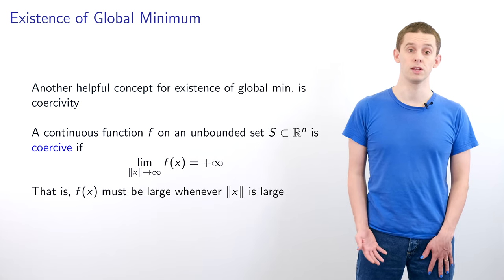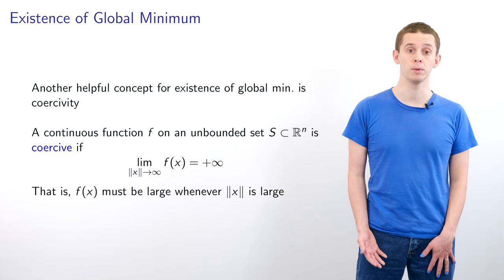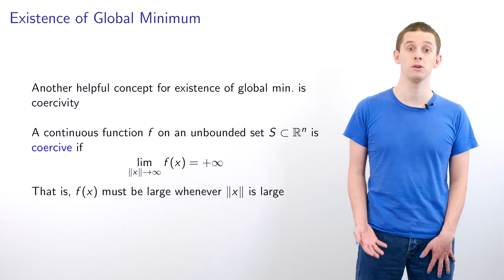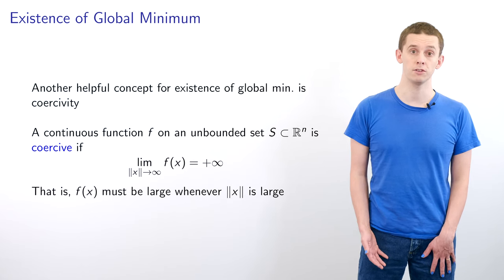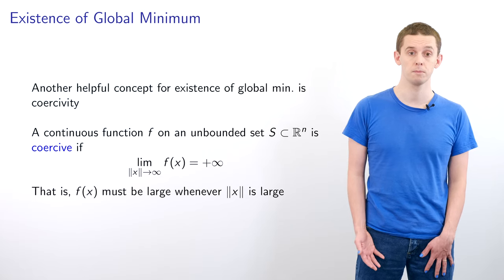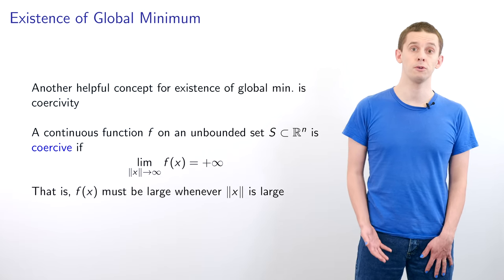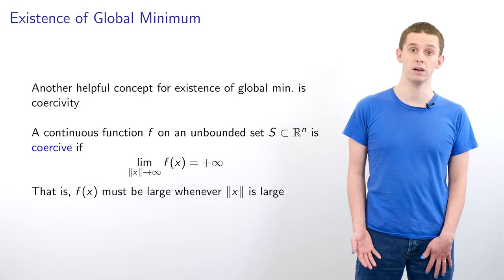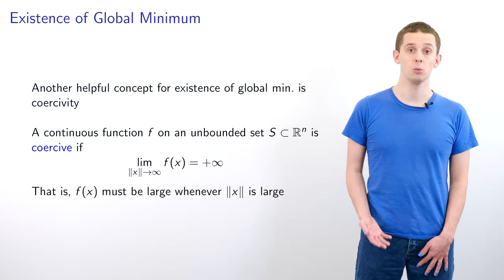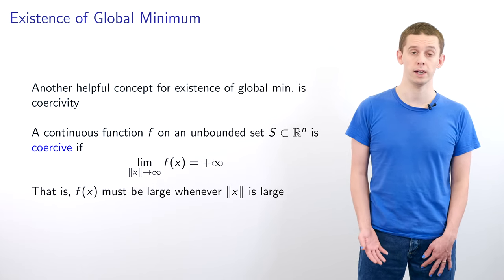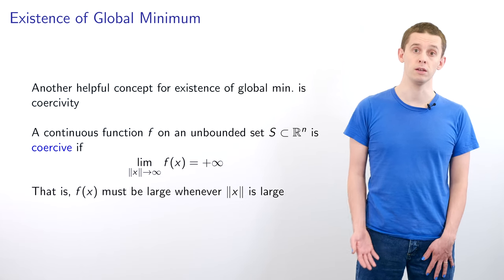Another helpful concept for the existence of a global minimum is coercivity. We say that a continuous function f on an unbounded set s contained within Rⁿ is coercive if the limit as the norm of x tends to infinity of f(x) is equal to infinity. Therefore, we're saying that f(x) must be large whenever the norm of x is large, and in this limit we are looking over all possible paths where x can go to infinity in norm.